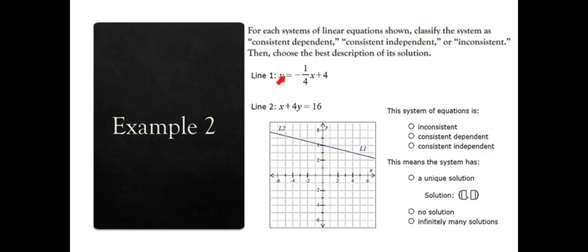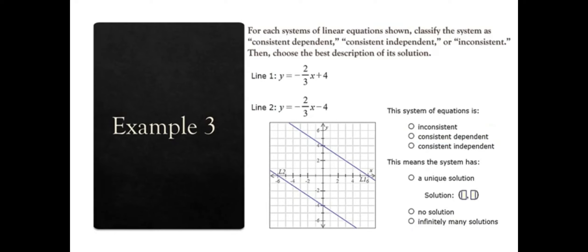In another example, if you look at line 1 and line 2 and they're actually the same exact line, there is a solution so it's not inconsistent. It is consistent-dependent because they're the same line, meaning infinitely many solutions. In a third case, the two lines do not cross each other — they appear parallel, which means they're inconsistent, with no solution because they will never cross. To summarize: consistent means there is a solution, and you determine if it's unique (independent) or infinitely many (dependent).